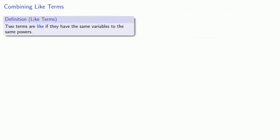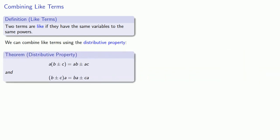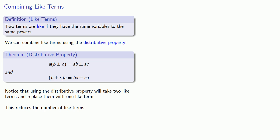We say that two terms are alike if they have the same variables to the same powers. And we can combine like terms using the distributive property. We'll go into details in a moment, but the thing to notice is that using the distributive property will take two like terms and replace them with one term. This reduces the number of like terms. If we keep combining like terms, we will eventually run out. And this leads to the following. We say that an expression is simplified if it has no like terms.